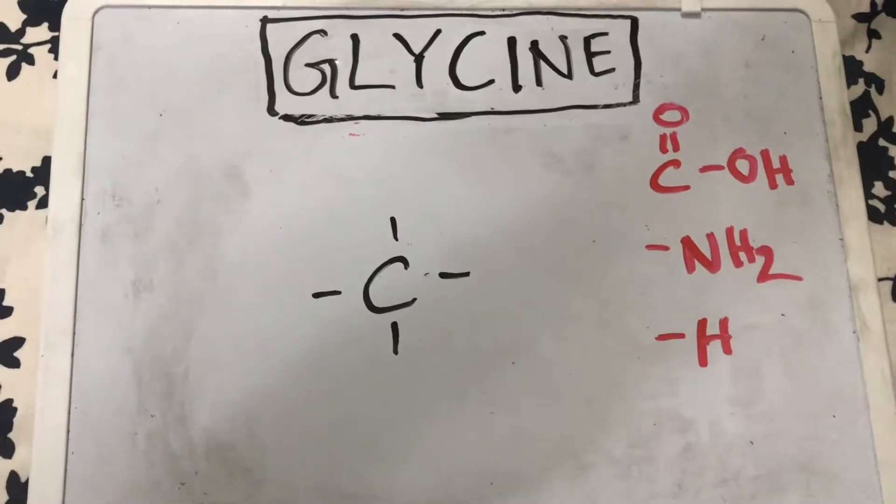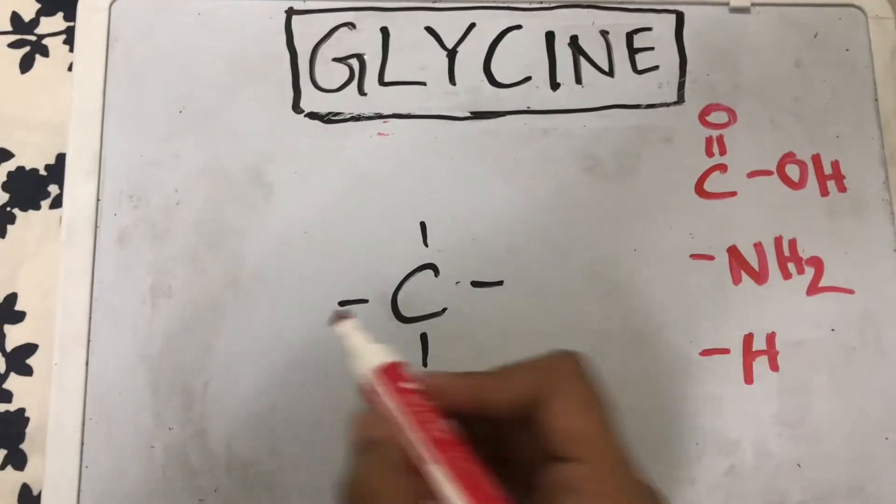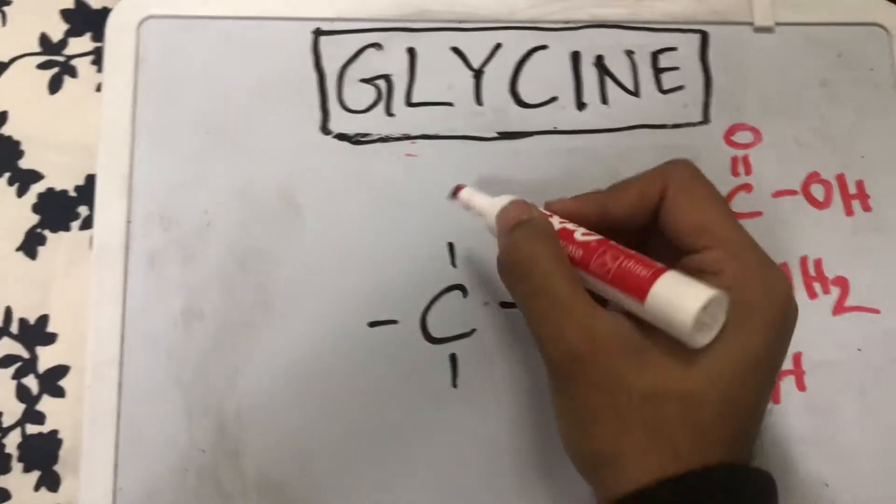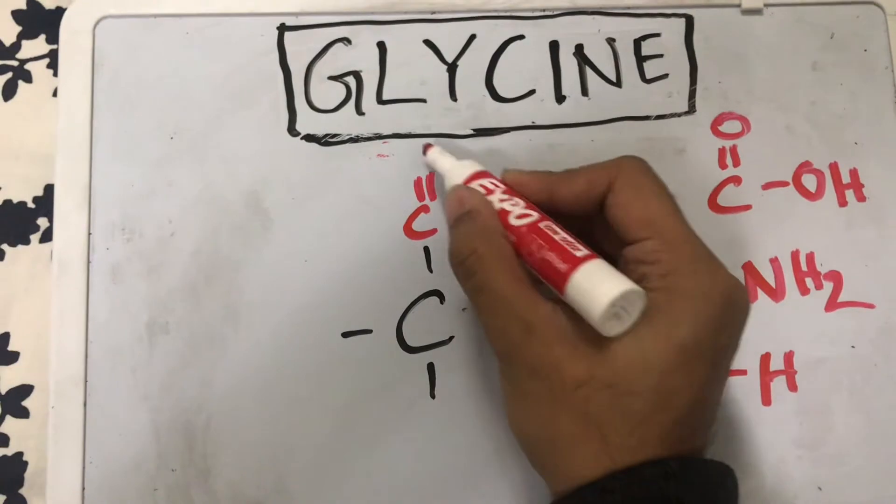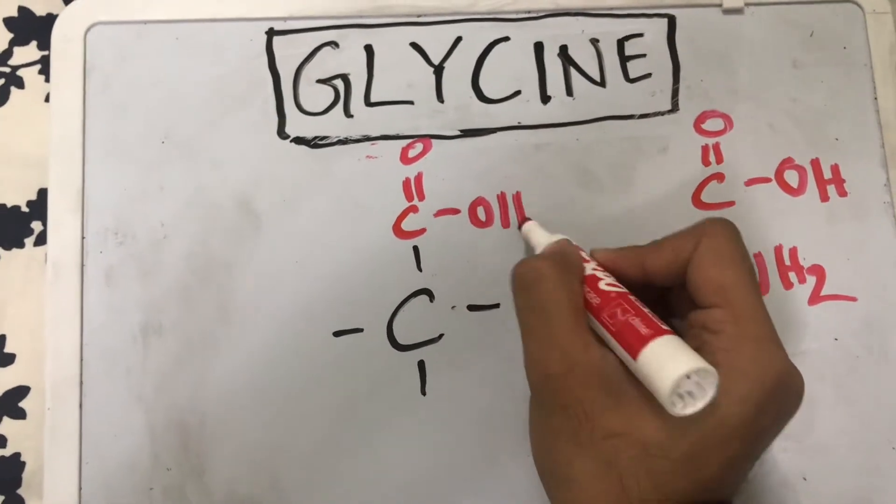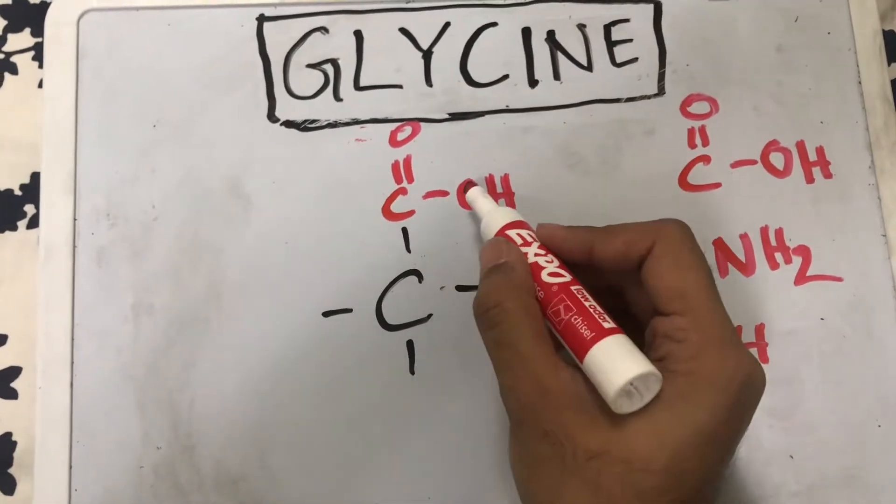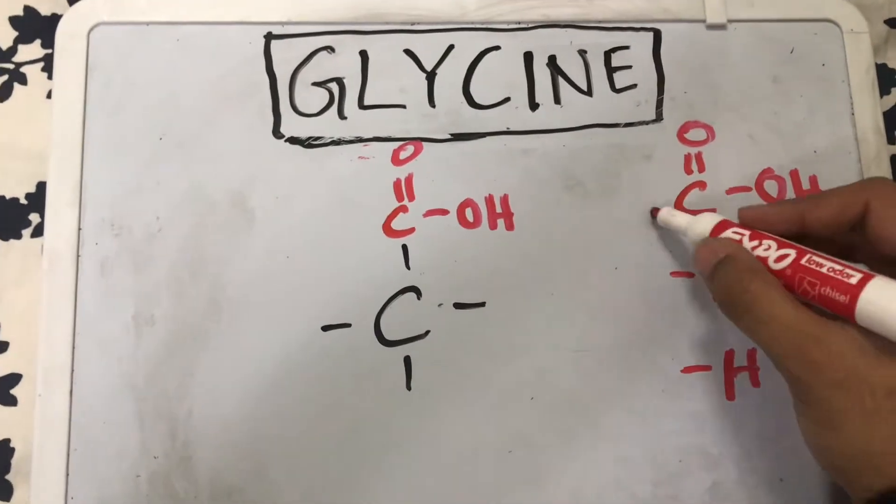Let's start with the carboxylic acid group. You could place it here, here, or here—I'll just place it on top, doesn't really matter. So I have my carbon attached to my carboxylic acid group.